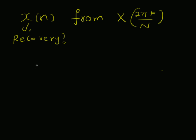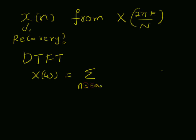To understand this, we first start with the definition of the DTFT. It is given as X(ω) = Σ from n = -∞ to +∞ of x(n) e^(−jωn). Note that x(n) is discrete here and X(ω) is a continuous signal — a continuous representation of the spectrum. So we are converting a discrete sequence into a continuous signal in the frequency domain.